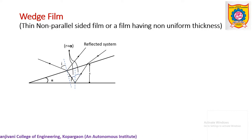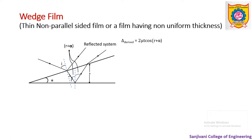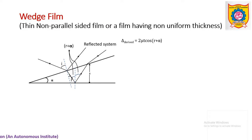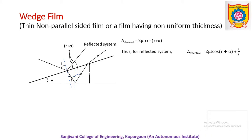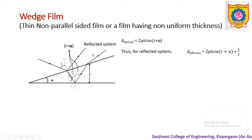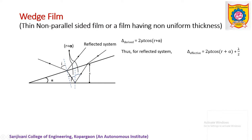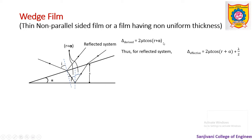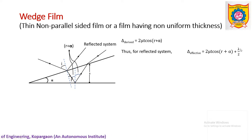For this reflected system, our aim is to get the conditions of constructive and destructive interference, which depend upon the path difference. From the figure, the derived path difference comes out to be 2μt·cos(r+α). In the previous case, for a parallel film, it was 2μt·cos(r) only, but r is now replaced by r+α. We then apply Stokes' law because at this interface there is a change in medium from rarer to denser, and by Stokes' law the path changes by ±λ/2. So the effective path difference becomes 2μt·cos(r+α) ± λ/2.